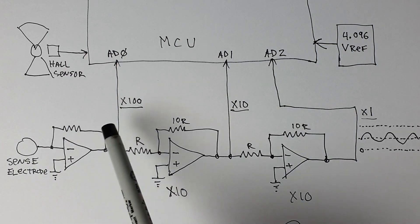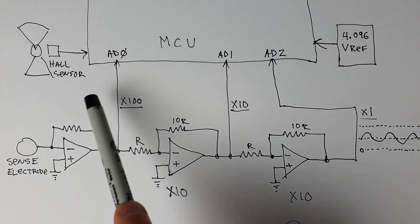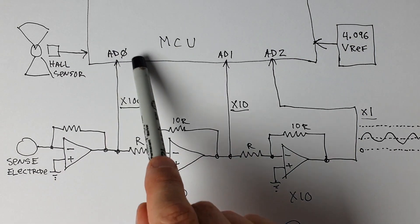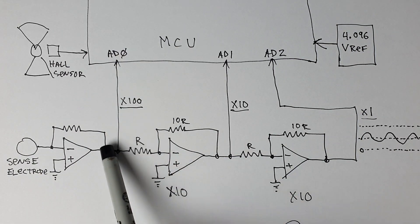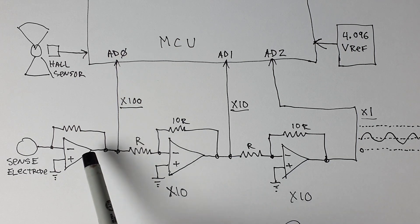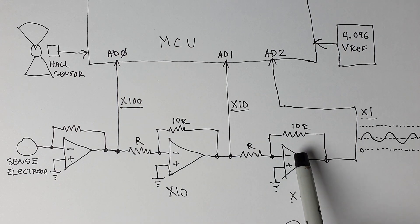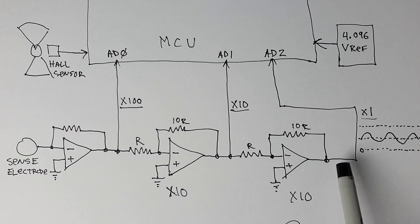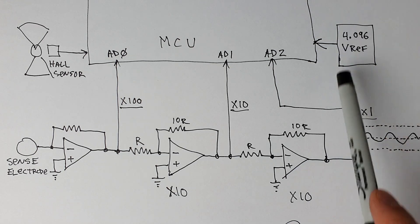Now, clearly when we're measuring a large signal, we'll use the low range, which has the least amount of amplification. And at that point, the high range is going to be saturated. It's going to be basically going all the way to the rail.